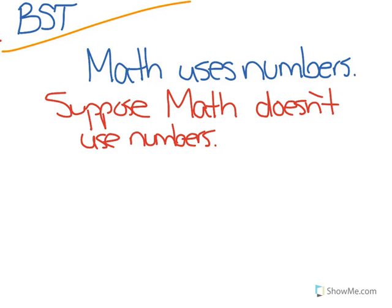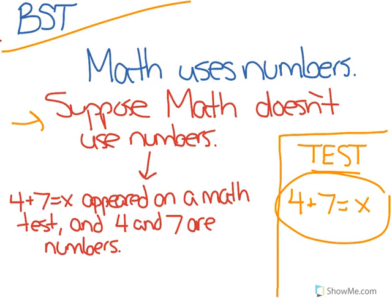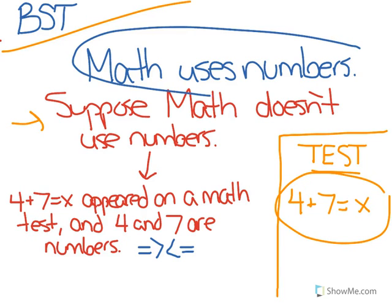Then I would use facts and logic to come to a contradiction that would prove this statement wrong. So maybe I have in my information box, I know that on a recent math test this problem appeared, 4 plus 7 equals x. So, in my proof, I might say that 4 and 7 appeared on a math test, and 4 and 7 are numbers. Therefore we've come to a contradiction, and can assume that this statement must then be true, because there was a contradiction in its opposite.